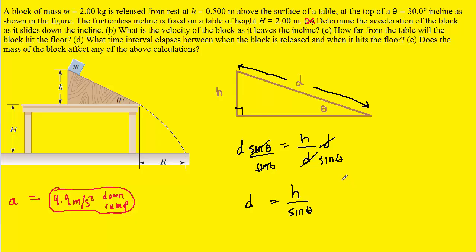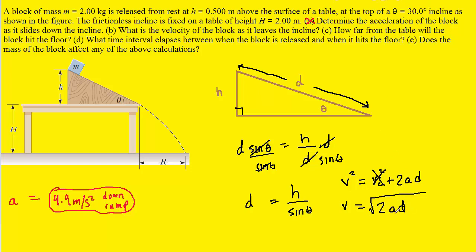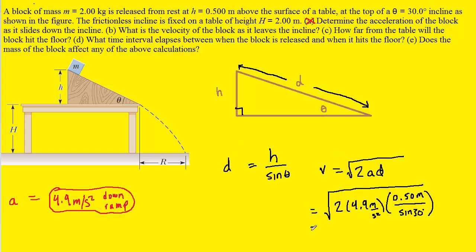This is an important result. To calculate the final velocity, we use the kinematic equation: vf² = vi² + 2·a·d. The block is released from rest so vi = 0, giving us vf = √(2·a·d). We already have the acceleration, and the displacement is h divided by sine theta. With h = 0.5 meters and theta = 30 degrees, plugging in all known values, the final velocity has a magnitude of 3.13 meters per second.